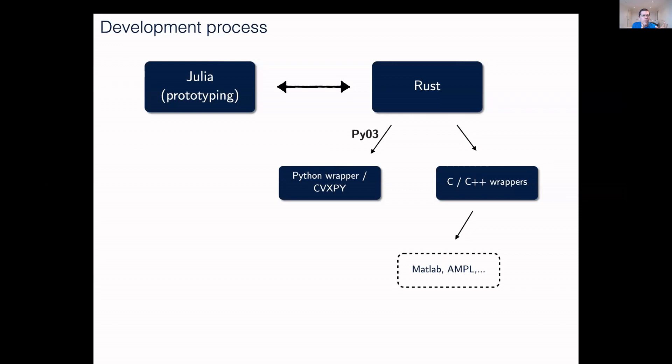We mostly develop within Julia and then port any changes to Rust, and then we release. From there, through Rust, we have a Python interface, which we make through PyO3. That's what most of our users will probably use in the end.